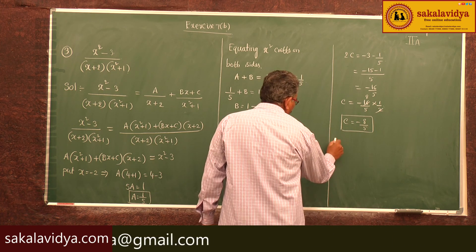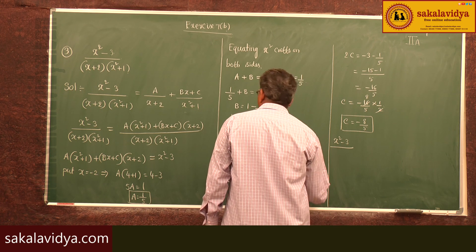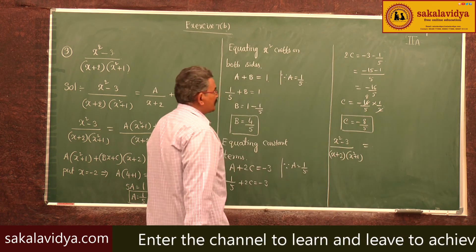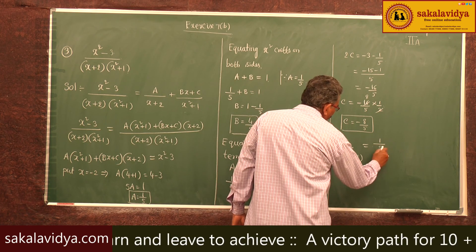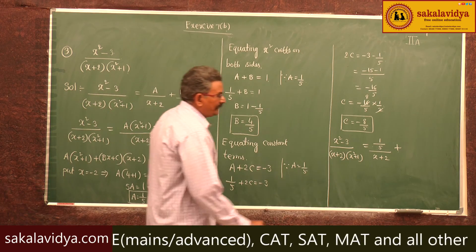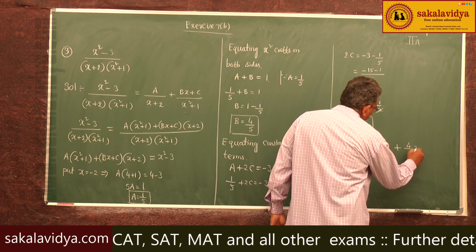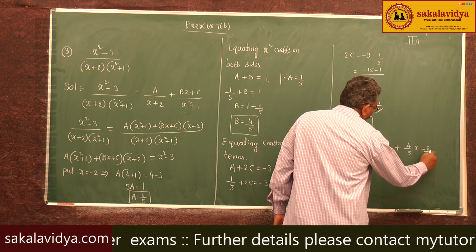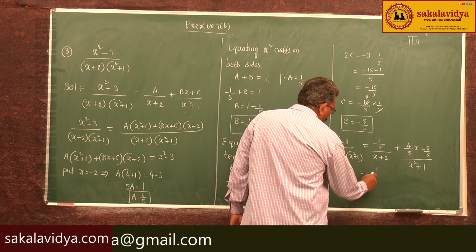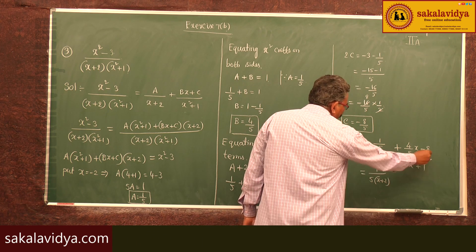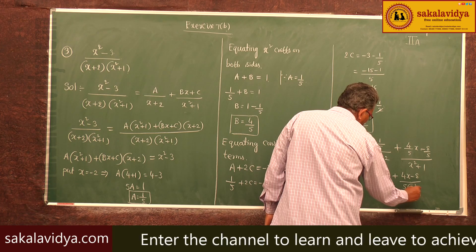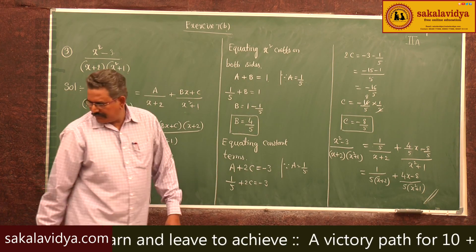Therefore, the partial fractions of (x²-3)/[(x+2)(x²+1)] are: 1/[5(x+2)] + (4x - 8)/[5(x²+1)]. These are the required partial fractions.